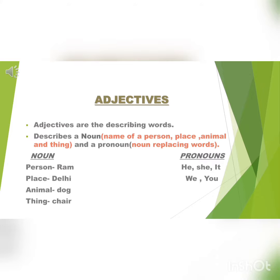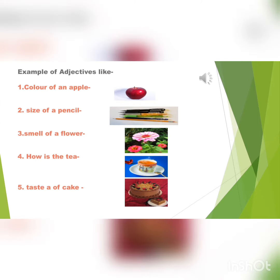In the next slide you can see many pictures. Let's read the first sentence: colour of an apple. You already know what is the colour of an apple — it is red. So red is an adjective and an apple is a noun. Let's move to the second sentence: size of a pencil. So long or short is an adjective and pencil is a noun.